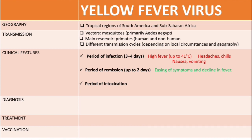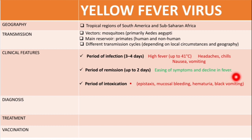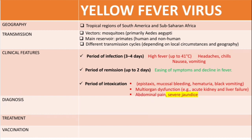The period of intoxication occurs in only 15% of patients showing symptoms. It is characterized by hemorrhage — including epistaxis, mucosal bleeding, hematuria, and black vomiting, which is mainly caused by esophageal bleeding. These patients also present with mild organ dysfunction such as acute kidney and liver failure, abdominal pain, and severe jaundice. Severe jaundice combined with high fever makes up the 'yellow fever' presentation.